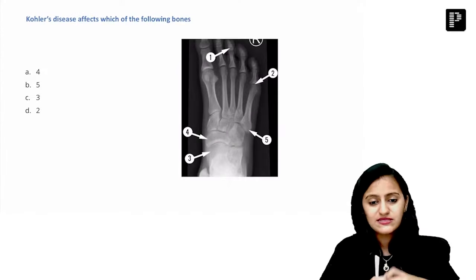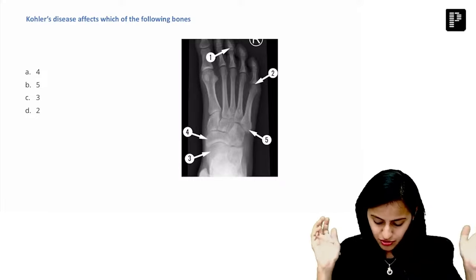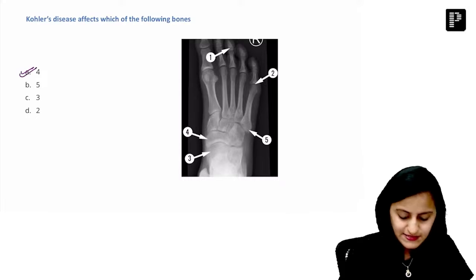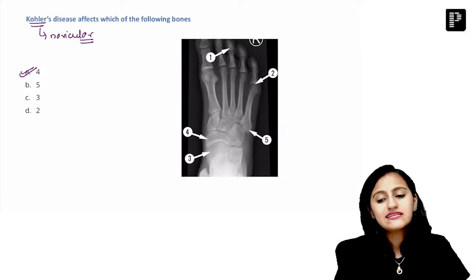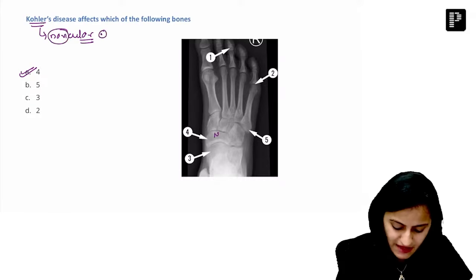Going to the next one. Kohler's disease affects which of the following bones? Bone labeled 4, 5, 3, 2. Very good, so all of you have answered it correctly. Remember Kohler is rhyming with navicular. So Kohler is navicular, and which is the navicular? This nav shape navicular is the nav shape boat-shaped bone. This is the navicular.